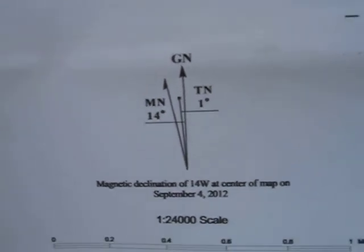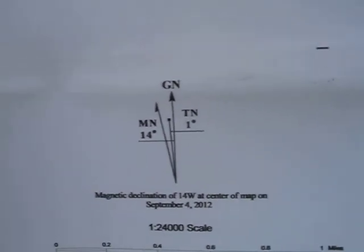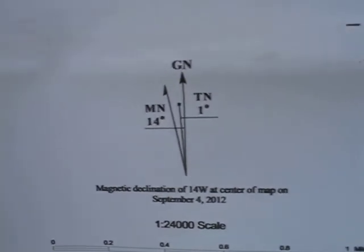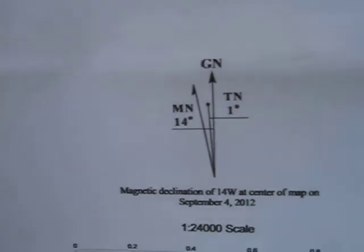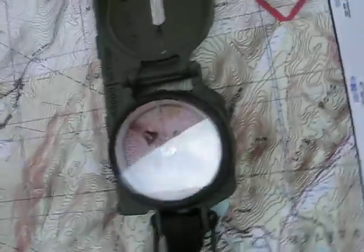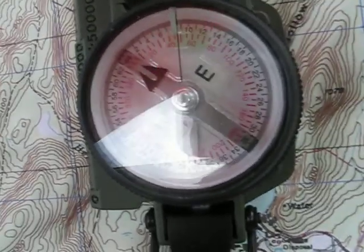As somebody had pointed out on my Arma 2 videos, I was not able to do declination or map orientation due to the fact you can't rotate the map in Arma 2. So here I'm going to show you how to do it. Somebody was trying to say you cannot do a declination on a lensatic compass — well, that person is wrong, and I'm going to show you how to do it.